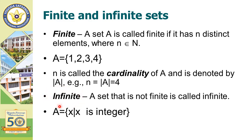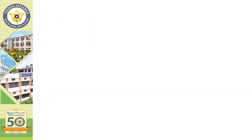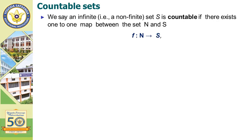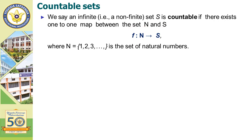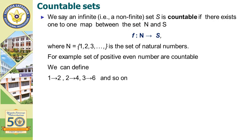What is the definition of countability of a set? Since infinite sets contain an infinite number of elements, how can they be countable? Some infinite sets are countable and some are not. We say an infinite set S is countable if there exists a one-to-one map between the set N and S, where N is the set of natural numbers and S is the set which is to be proven countable.